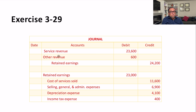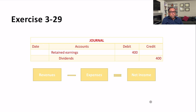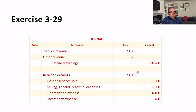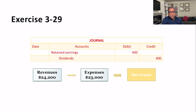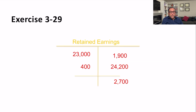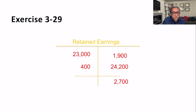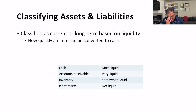In the journal, entries include service revenue, other revenue, retained earnings, and cost of goods sold. Revenue minus expenses gives us net income. We take all the revenue debits, subtract expenses, and arrive at net income. We then add that to the existing retained earnings balance — bringing it to 1,200 — but there is a dividend of 400, giving us a closing retained earnings balance of 2,700.